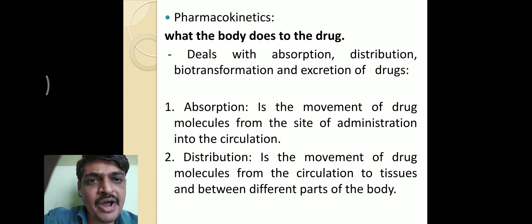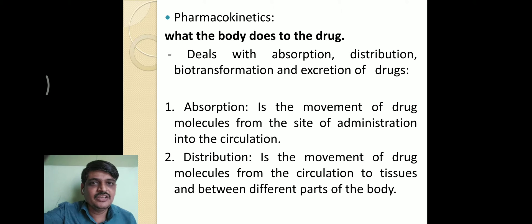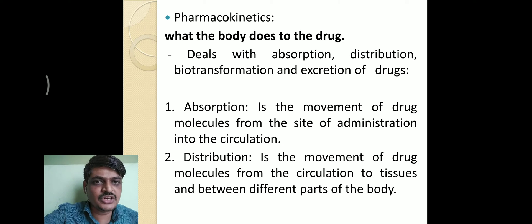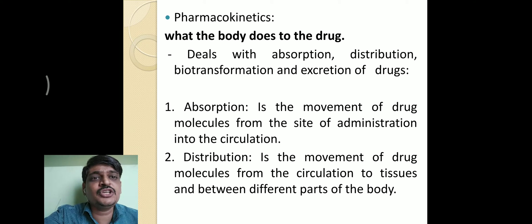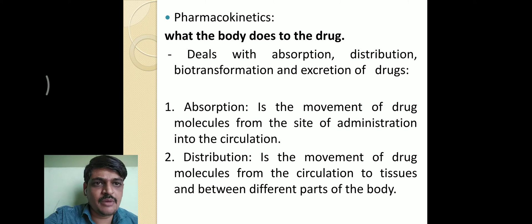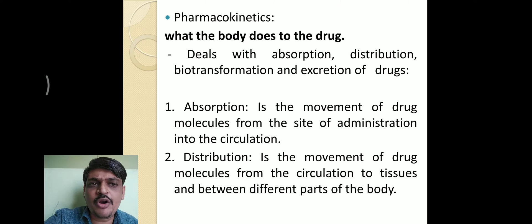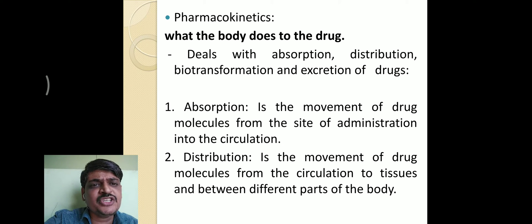Absorption is the first step of pharmacokinetics — the movement of drug molecules from the site of administration into the circulation, whether by oral, internal, parenteral, or topical routes. The second step is distribution: after absorption, drugs enter systemic circulation and distribute into various body compartments in small concentrations. Distribution means the movement of drug molecules from the circulation to tissues and various body parts.